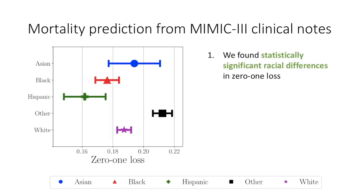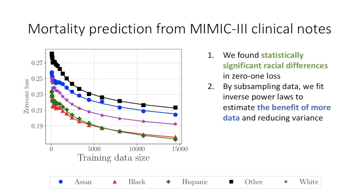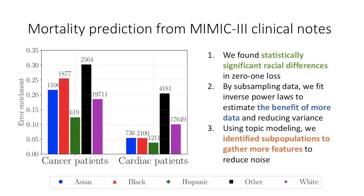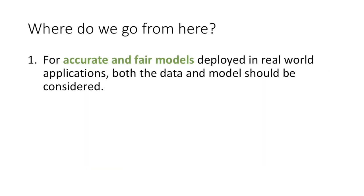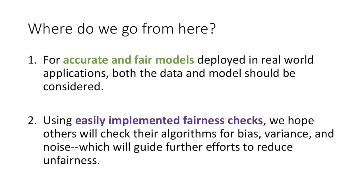Going back to predicting hospital mortality from clinical notes, we showed statistically significant racial differences in error, how to estimate the effect of adding more data, and how to identify subpopulations to gather more features to reduce noise. Looking forward, we have shown that accurate and fair models must consider both the model and the underlying training data. In this work, we've presented easily implementable fairness checks that we hope others will adopt.